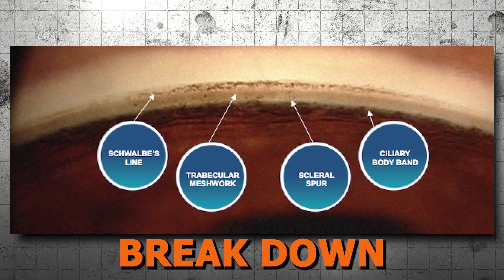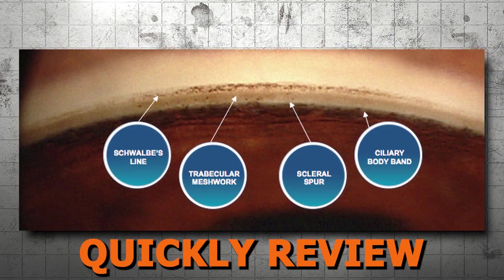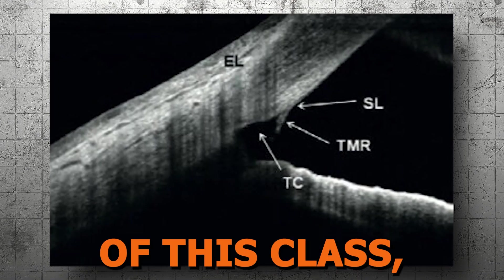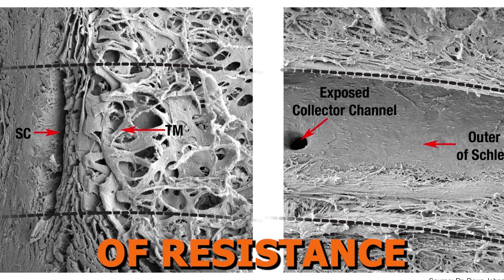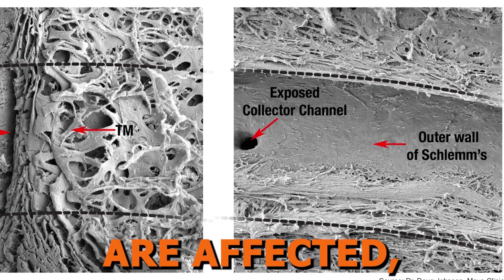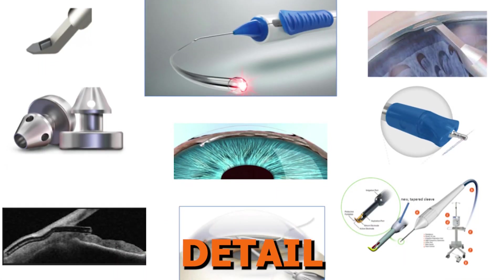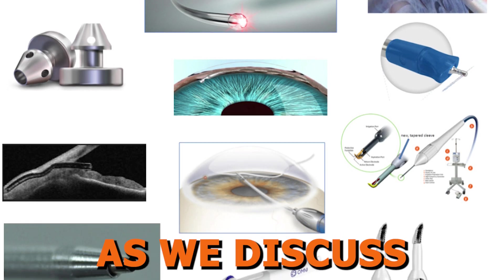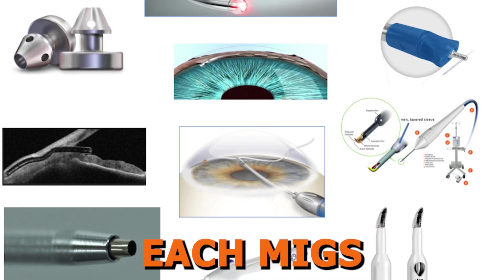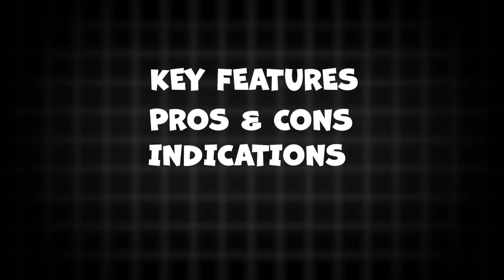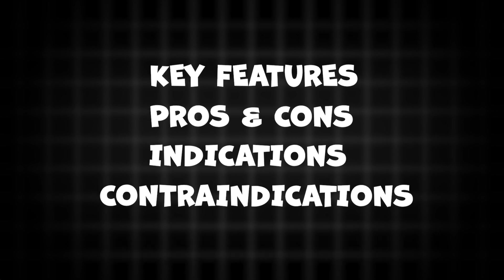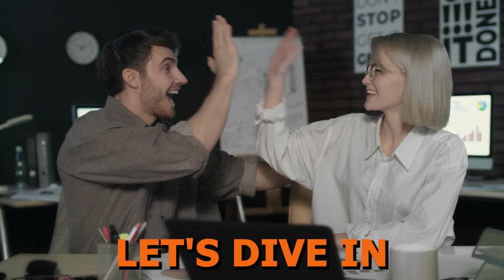As we break down this class, we will first quickly review angle anatomy, then discuss the mechanism of action of this class, how the areas of resistance in the outflow system are affected, and then go into some detail on which MIGS procedures are available within this class. As we discuss each MIGS device, we will go over its key features, the pros and cons, indications for usage, as well as contraindications to help with patient selection. Let's dive in.